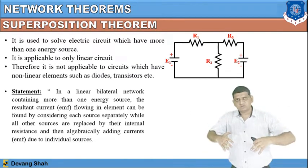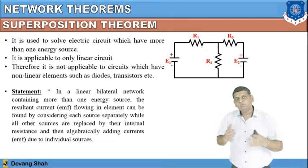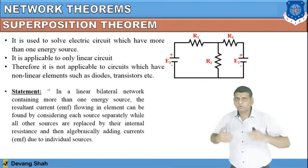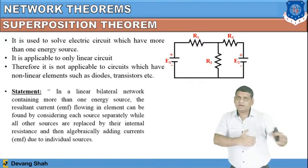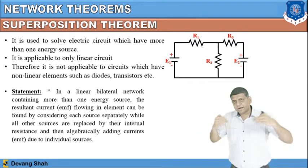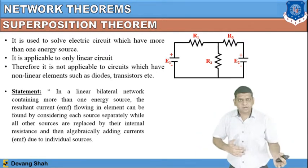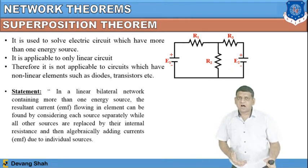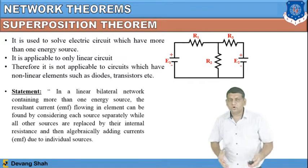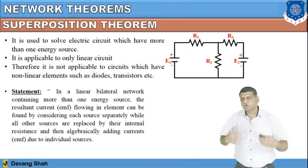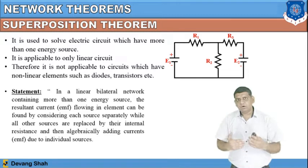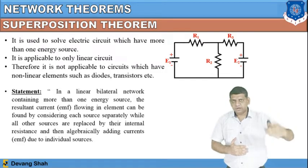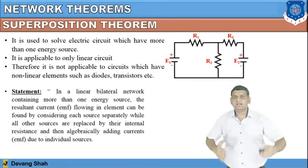You cannot take two voltage sources together simultaneously. What you have to do is take first the effect of E1 and calculate it. Then take the effect of E2 and calculate it. Finally, algebraically add or subtract these two effects — the currents passing through or voltage across resistance R2. Superposition means at a time only one source is considered — only one source is at a supreme position acting in the circuit.